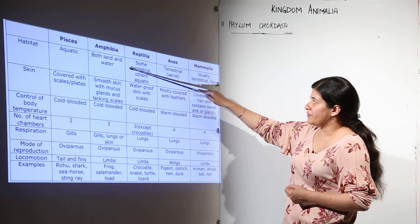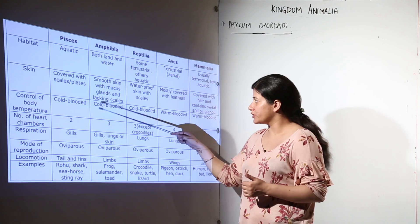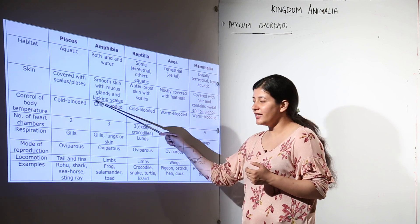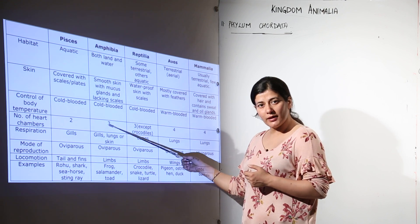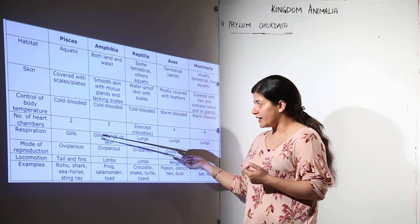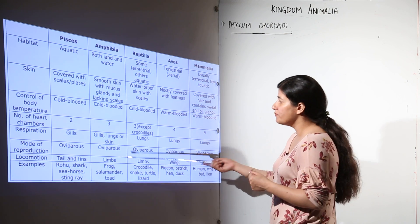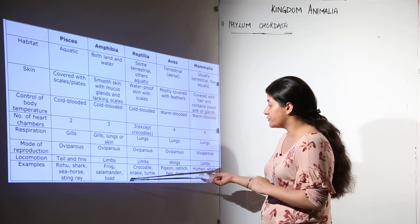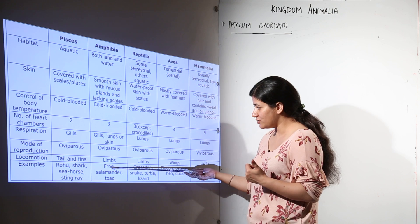Moving further, Amphibia can be present in both land and water. They have smooth, moist skin with mucous glands and they lack scales. They are cold-blooded, a three-chambered heart is present, and respiration is by gills, lungs, or skin as we studied in the case of the frog. Their mode of reproduction is oviparous and development is indirect, occurring through larval stages such as the tadpole.